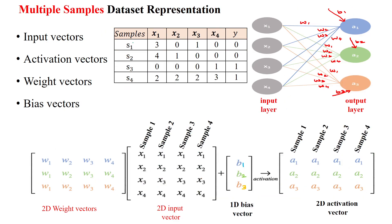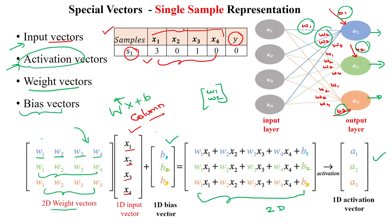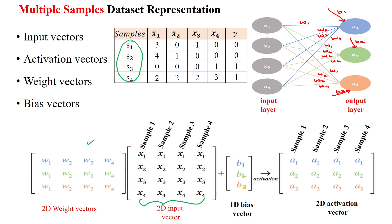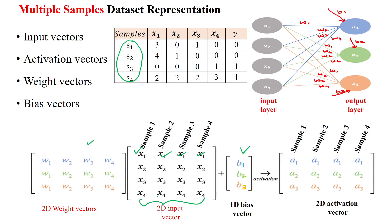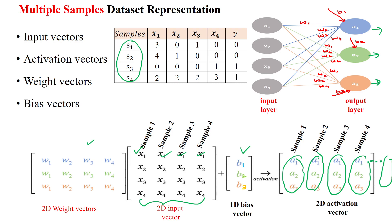Suppose our dataset has multiple samples — for example, four samples. How can we represent them using matrix or vectors? Here we use a two-dimensional structure. Previously we used only a single column; now we use multiple columns representing sample 1, sample 2, sample 3, and sample 4, along with bias values. Applying the same calculation, for sample 1 you get the output from all output layer neurons, and similarly for samples 2, 3, 4, and up to sample n. Data can be represented using vectors and matrix combinations for ML and DL applications — not only for neural networks, but also for SVM, logistic regression, decision trees, and all machine learning algorithms.